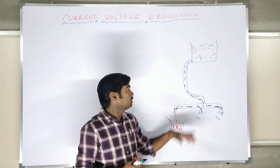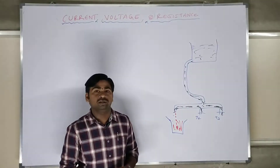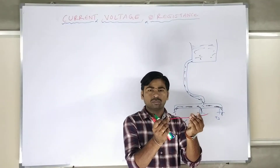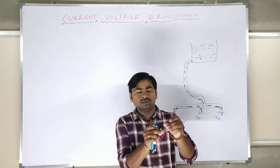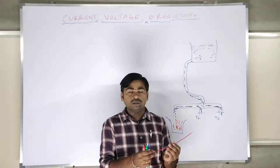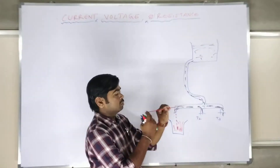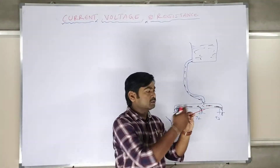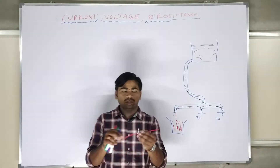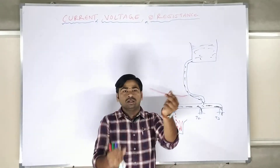The flow of water through the pipeline is nothing but current. Applying the same concept electrically: the flow of charge carriers through an electrical wire is nothing but current. The pipeline is like the insulation of a wire. The flow of charge carriers from one place to another through the electrical conductor is nothing but current.